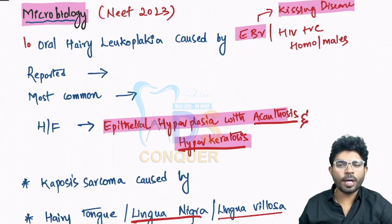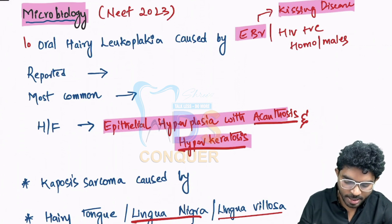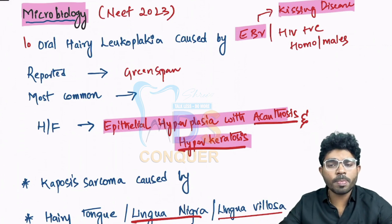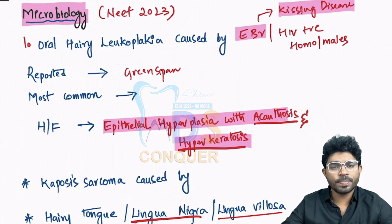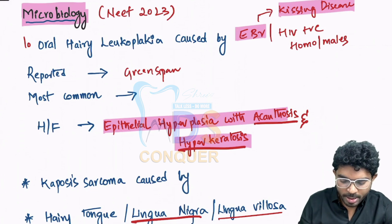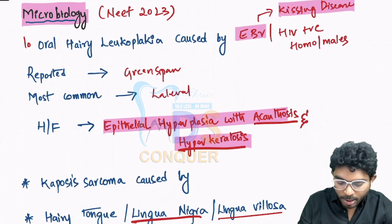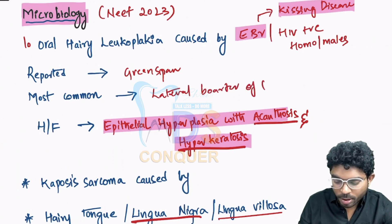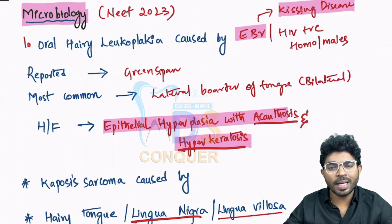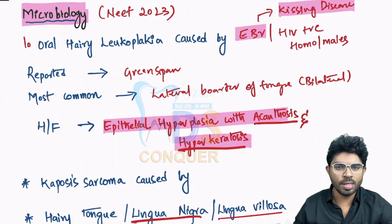The next: oral hairy leukoplakia was first reported by a scientist named Greenspan. Please mention in the comment box what is Greenspan lesion and what is Greenspan syndrome. Oral hairy leukoplakia is most commonly seen at the lateral borders of the tongue and preferably it is going to be bilateral. Coming to the histology, it mainly focuses on epithelial hyperplasia with acanthosis and hyperkeratosis.